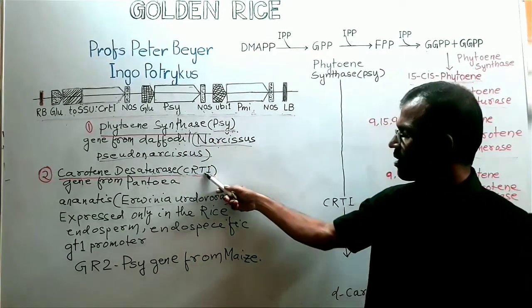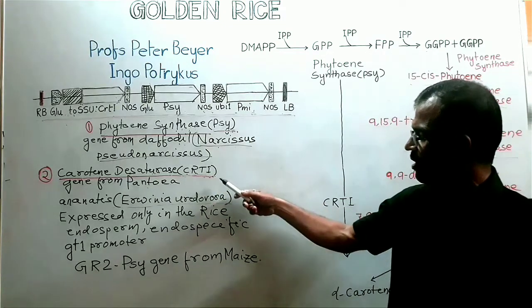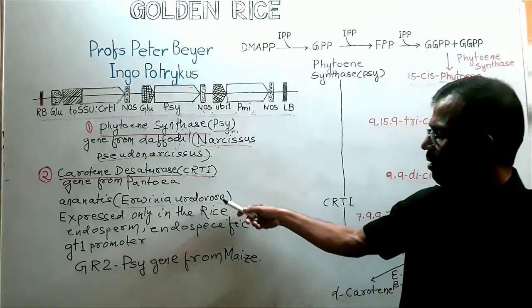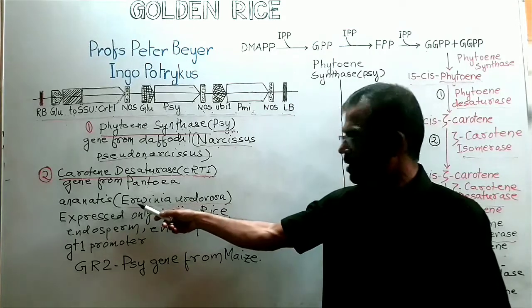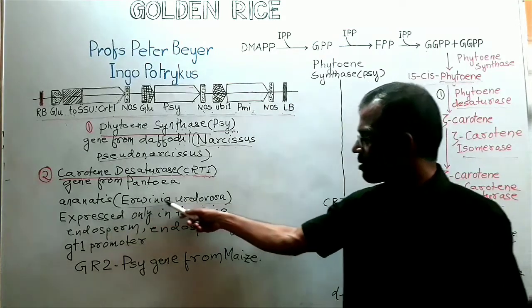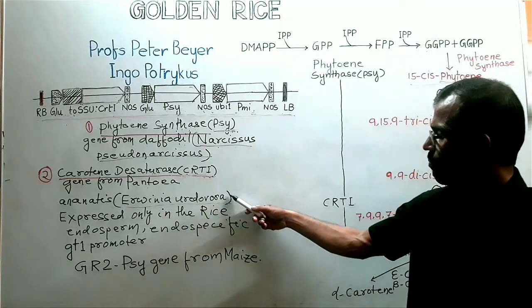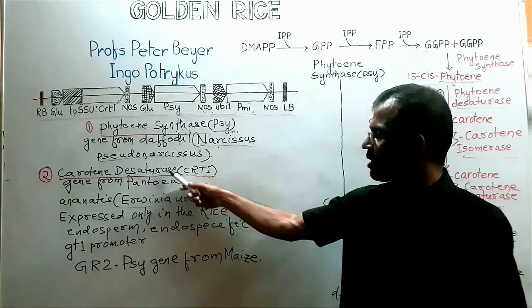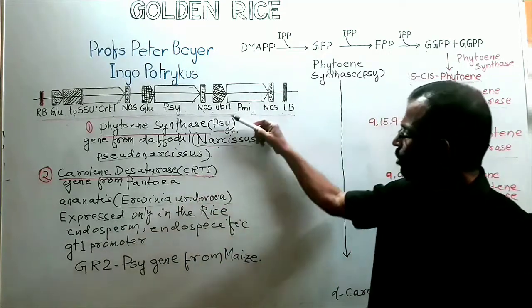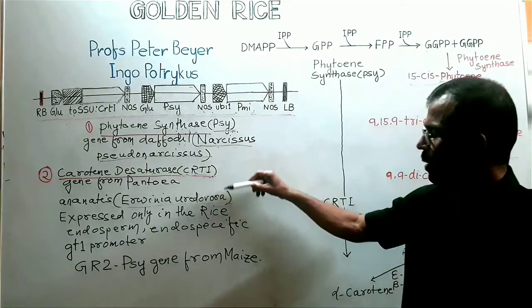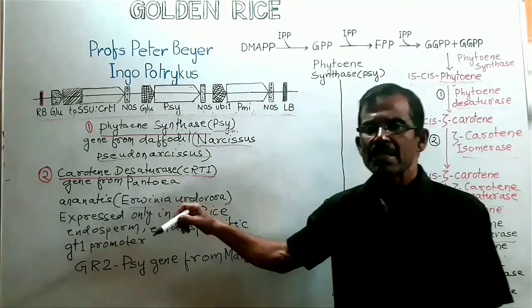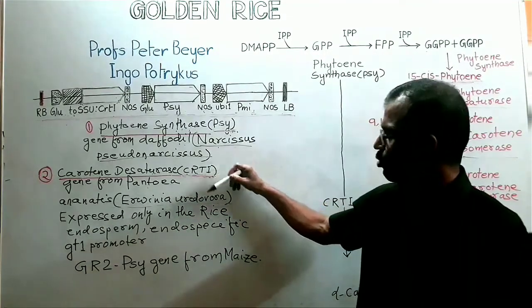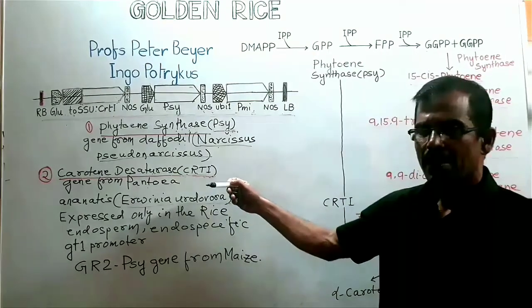The second transgene that is expressed in golden rice is CRTI gene. CRTI gene has been obtained from bacterium Pantoea ananatis, which was previously known as Erwinia uredovora. CRTI gene codes for the enzyme bacterial carotene desaturase. Both of these transgenes have been placed under the control of rice endosperm specific promoter so that both of these transgenes will be expressed in the rice endosperm.